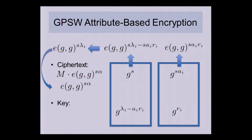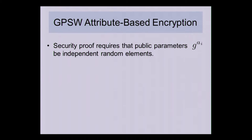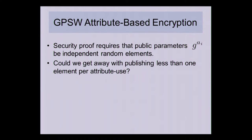If you stare at GPSW for a while, you notice that the full security proof requires that the public parameters g^(a_i) are independent random elements — not only for each attribute, but for every attribute use in policies. If you want a policy that uses attributes more than once, you need a fresh g^(a_i) for each use. This means the public parameters can get very large for a large attribute set and many uses. So the natural question arises: can we get away with publishing less than one element per attribute use in the public parameters?